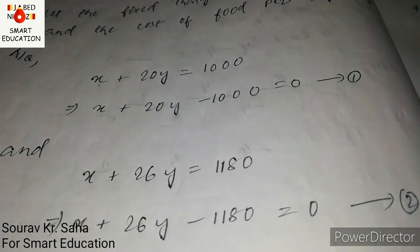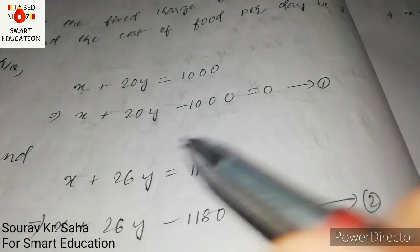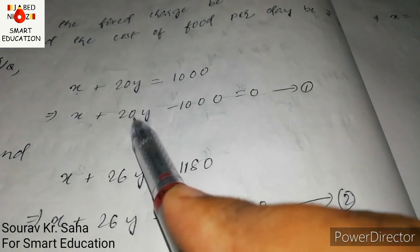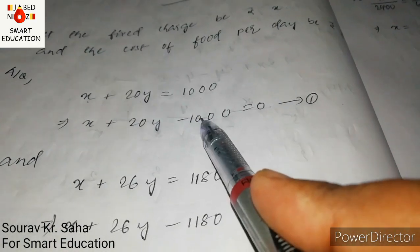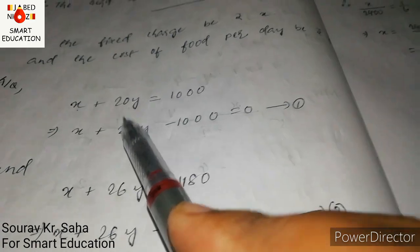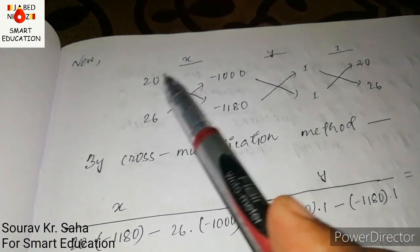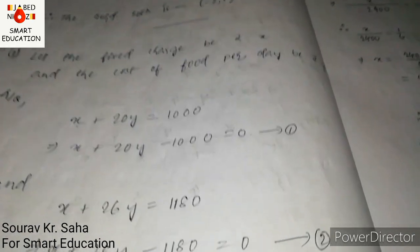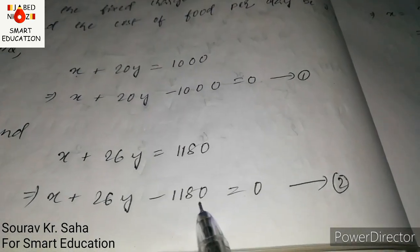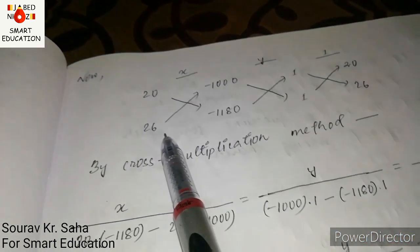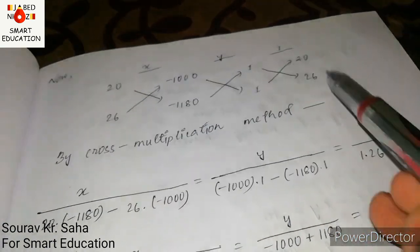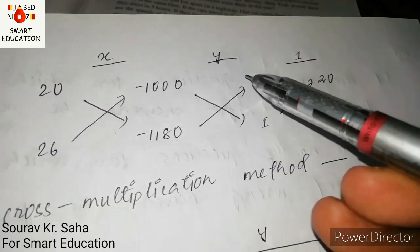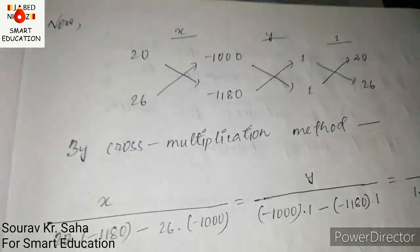Now we apply the cross multiplication method. Writing the coefficients: for equation one — 1, 20, minus 1000 — and for equation two — 1, 26, minus 1180. Setting up the cross multiplication pattern to find x, y, and the constant term.